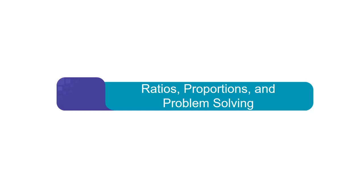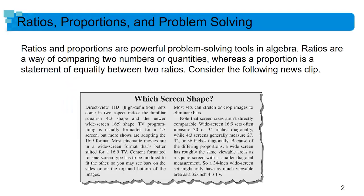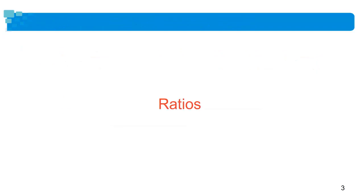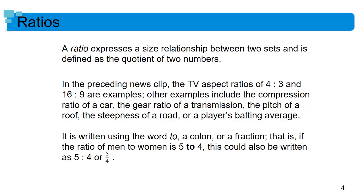Welcome to our discussion on ratios, proportions, and a little bit of problem solving — but mainly ratios and proportions. You've all seen ratios and proportions before. Anytime you've looked at a new TV, the newer ones have a 16-by-9 aspect ratio — that's a ratio. The older screens are four-by-three, again that's a ratio. Simply, a ratio is a comparison of two sizes — a way to express the relationship between two sizes for things that are somehow related.